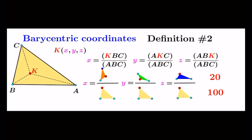then the third barycentric coordinate of point K, z_K has a value of 20% or 0.2.